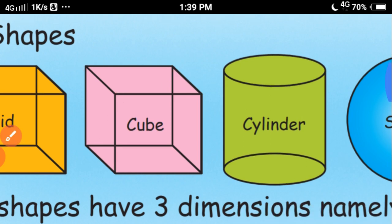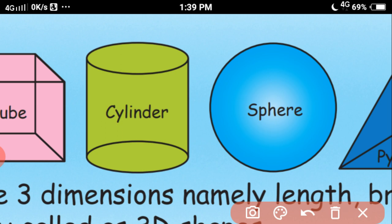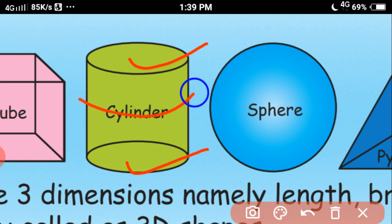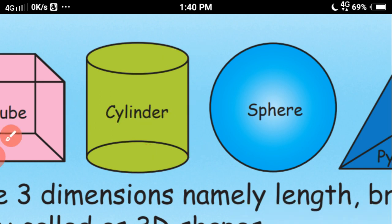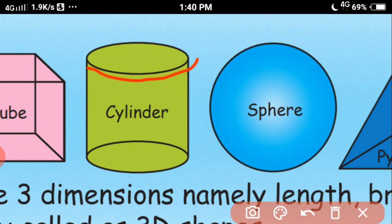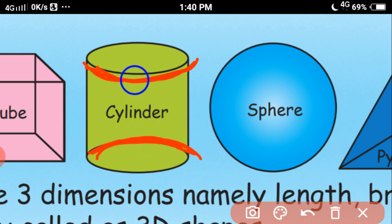Next, we can see cylinder. A cylinder has 3 faces — 2 of them are flat while the third is curved. So it has 2 flat faces and 1 curved face. Where the flat face and curved face meet, that is the edge. So a cylinder has 2 circular edges.